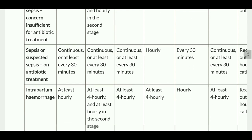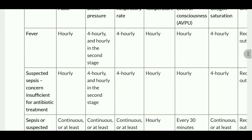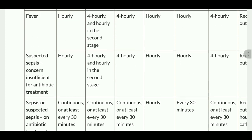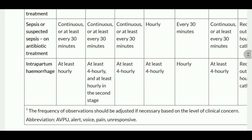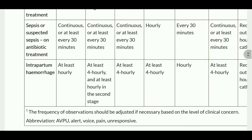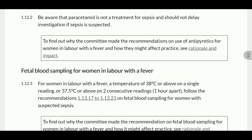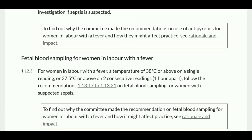For intrapartum hemorrhage: monitor pulse at least hourly, blood pressure at least four-hourly, respiratory rate at least four-hourly, temperature at least four-hourly, level of consciousness hourly, and oxygen saturation at least four-hourly; record input and output. Regarding use of antipyretics for women in labor with fever: consider paracetamol for women with a temperature of 38 degrees Celsius or above on a single reading, or 37.5 degrees on two occasions. Be aware that paracetamol is not a treatment for sepsis and should not delay investigation of suspected sepsis — it is symptomatic treatment only. The topic of fetal blood sampling in labor with fever was also introduced.